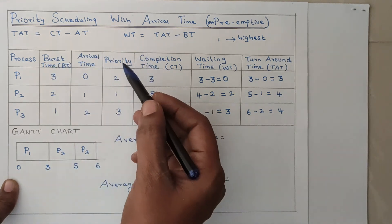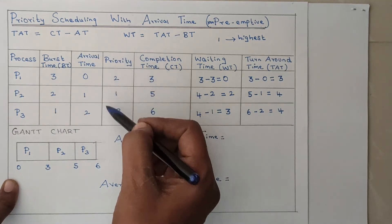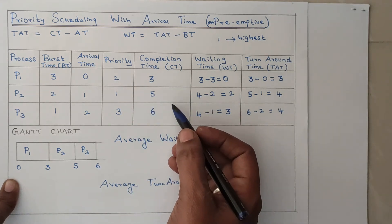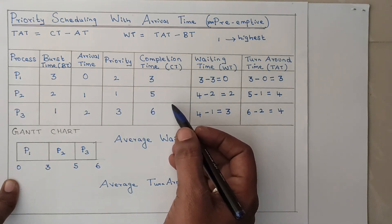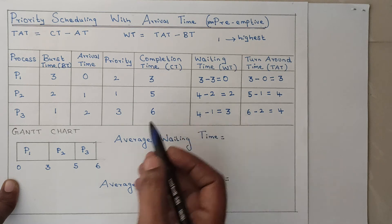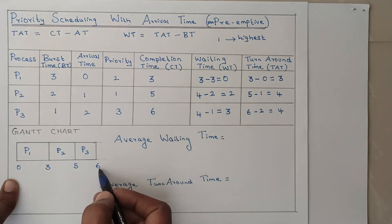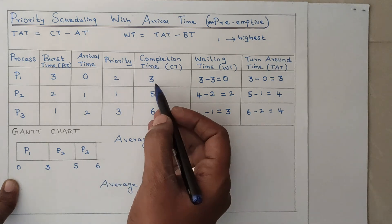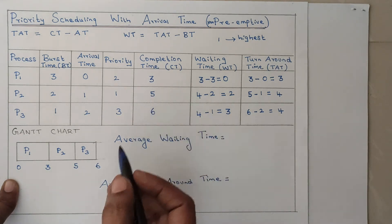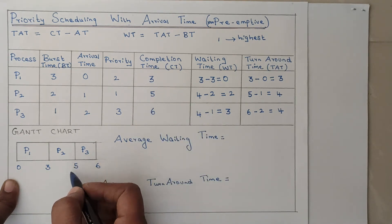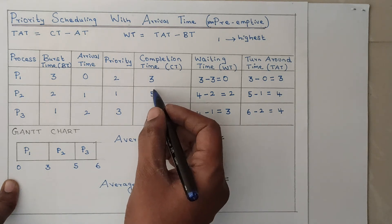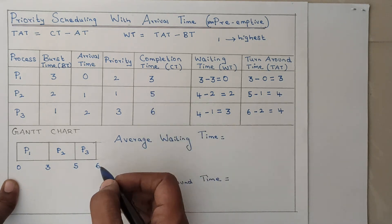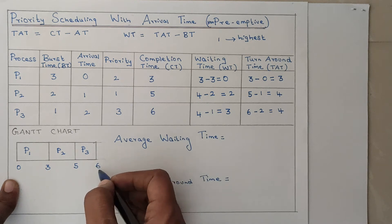In priority scheduling we have one more column called priority. Now we calculate the completion time. The completion time is read from the right-hand side of the Gantt chart. The completion time of P1 is 3, the completion time of P2 is 5, and the completion time of P3 is 6.